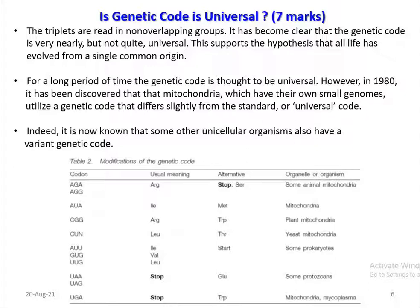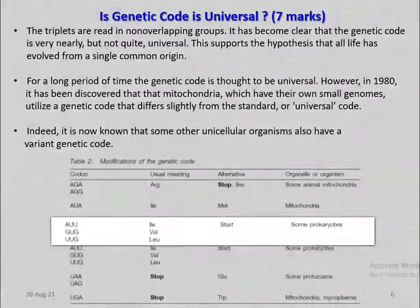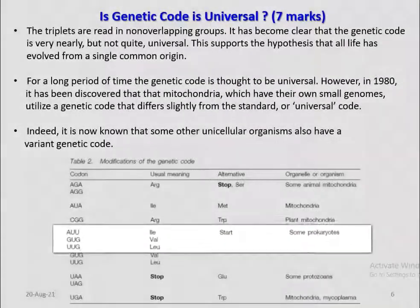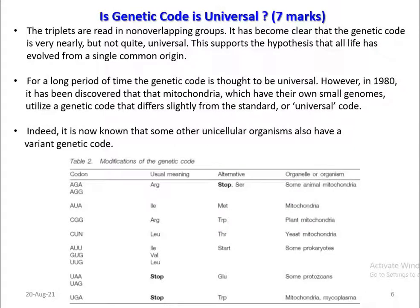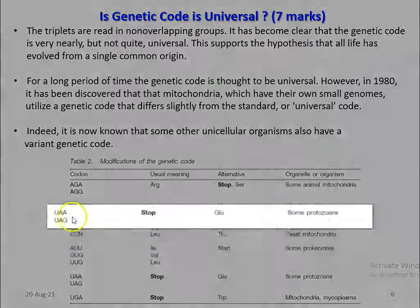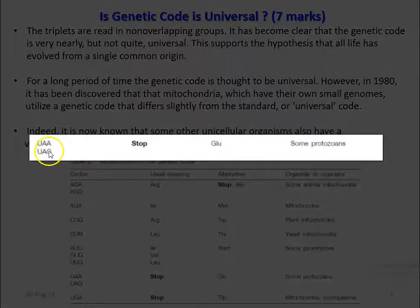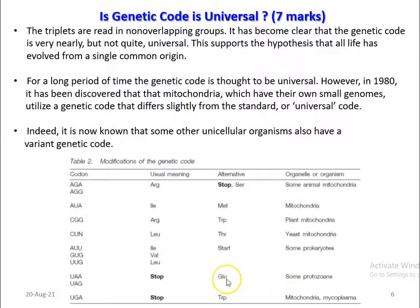Like that, certain variations in the code exist — that is the reason why the genetic code is not perfectly universal. It is also known that some unicellular organisms, especially certain yeast and some prokaryotes, have a different code from the standard genetic code. For example, the codons UAA and UAG generally act as stop codons in all living organisms; however, in certain protozoans they code for glutamine.